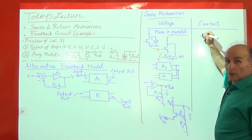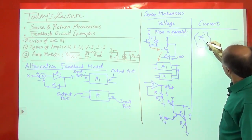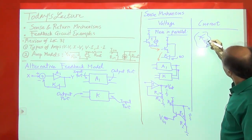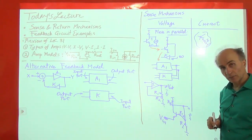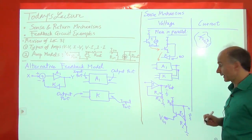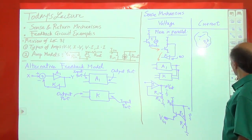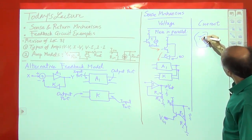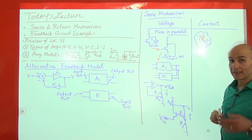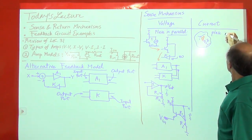Now let's look at how to measure a current. If there is some component in a circuit and current is passing through it, we have to cut that branch and place a current meter in series with it. That's the key difference: to measure a current, we place the current meter in series with the branch of interest.